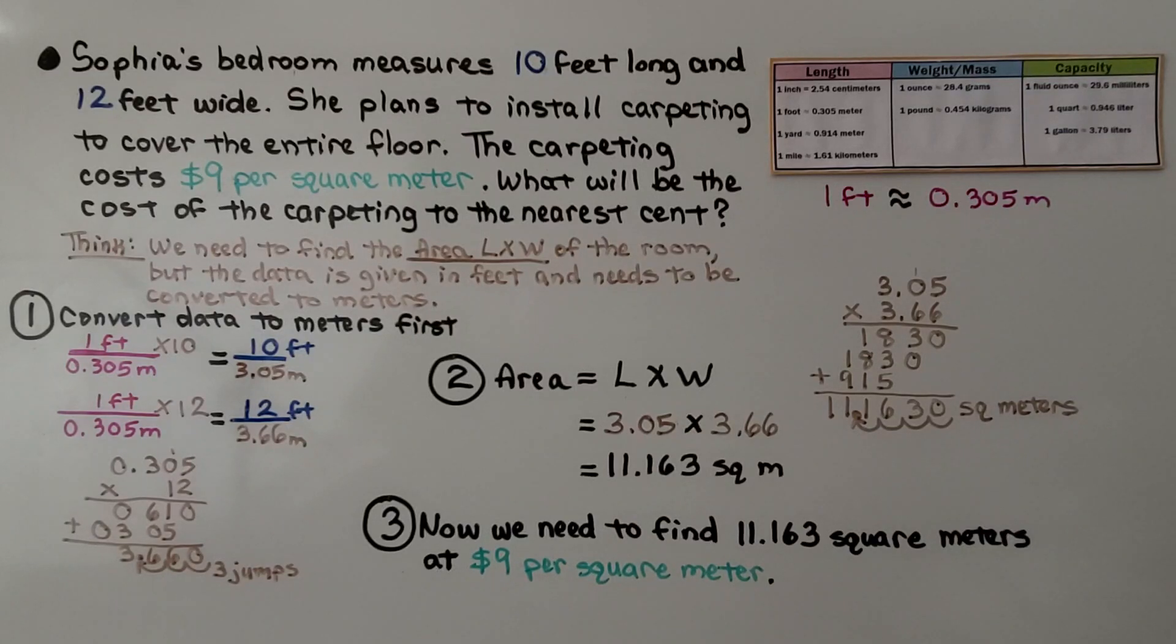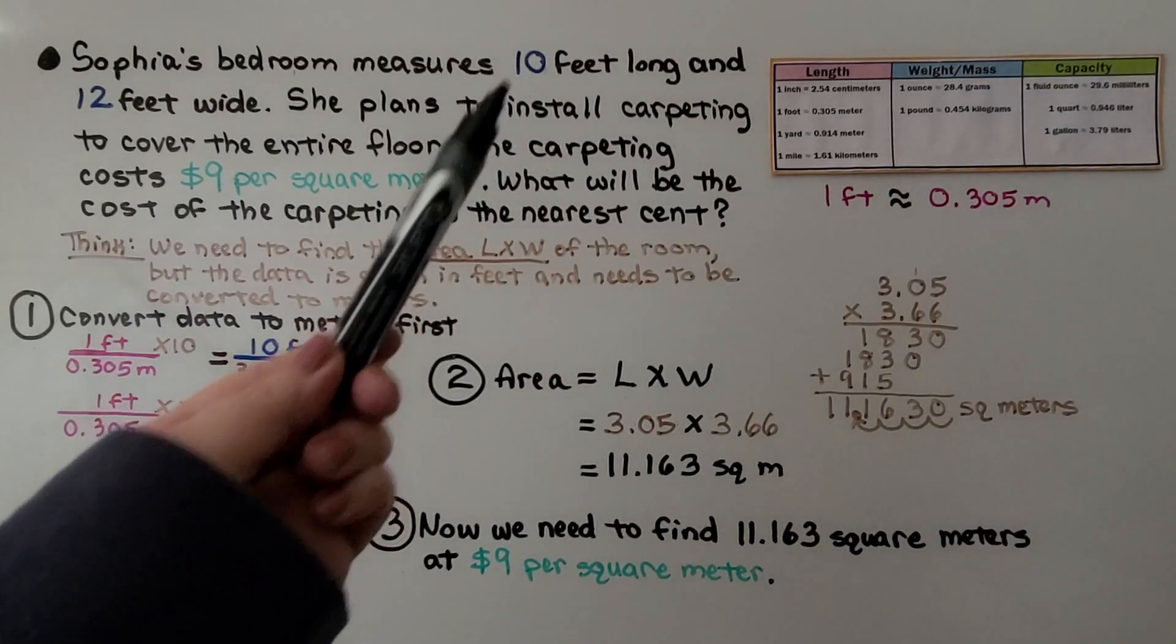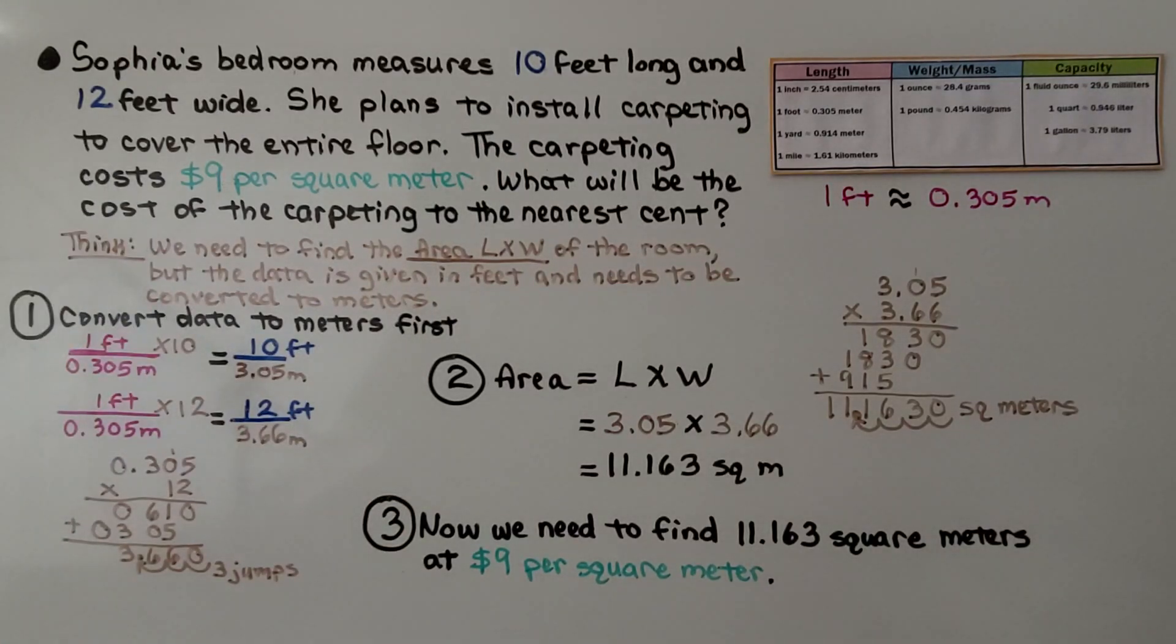Here we have a multi-step problem. It says Sophia's bedroom measures 10 feet long and 12 feet wide. She plans to install carpeting to cover the entire floor. And the carpeting costs $9 per square meter. What will be the cost of the carpeting to the nearest cent?